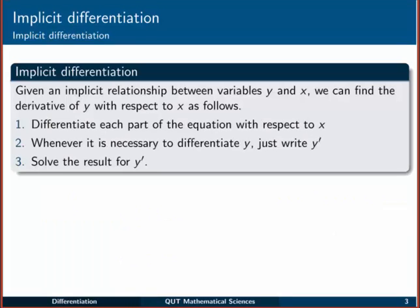Essentially this is the process. Given that we have an implicit relationship between variables y and x, we can still find the derivative of y with respect to x using these three steps. Basically we differentiate each part of the equation, both sides of the equation, with respect to x.